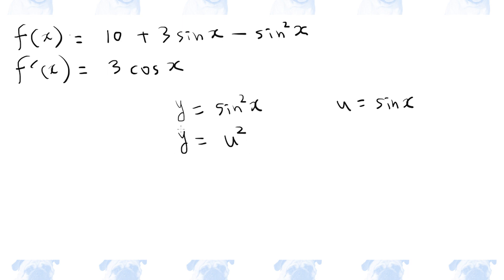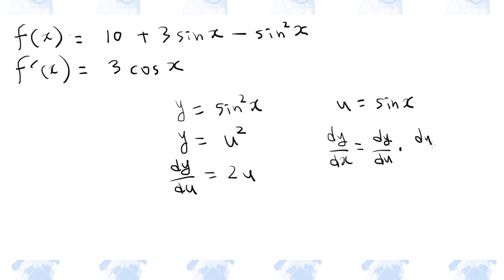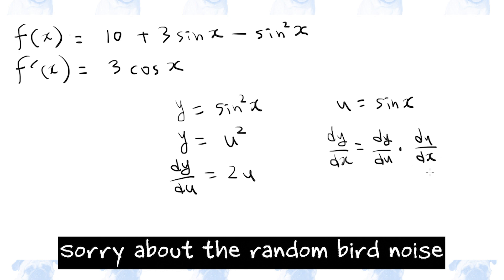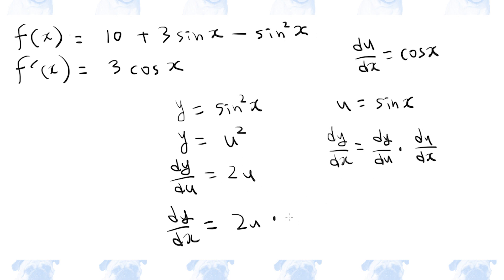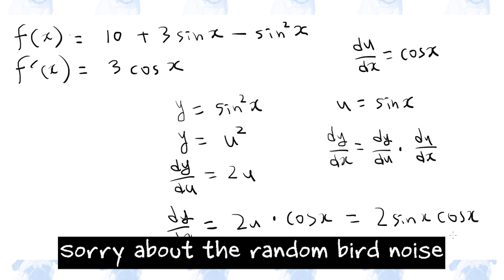Now let's differentiate y with respect to u. To get dy/dx, we need to use the chain rule, which states that dy/dx is equal to dy/du times du/dx. So what is du/dx? Because u is sine x, du/dx is cosine x. Therefore, dy/du is 2u times du/dx is cosine x, and u is sine x. So the derivative of sine x squared is 2 sine x cosine x.